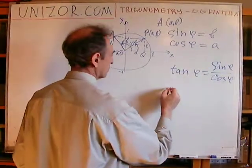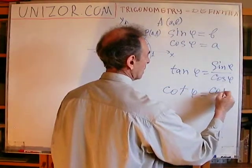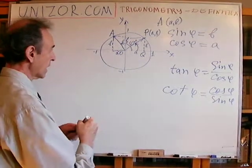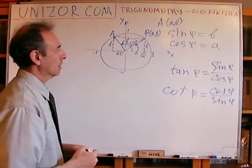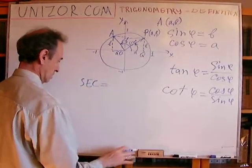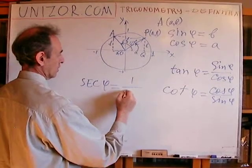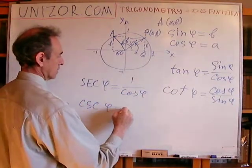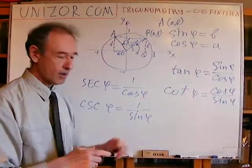Cotangent is, by definition, cosine over sine, which corresponds to the triangular definition of A over B. What else is left? Secant and cosecant. Secant phi, by definition, equals one over cosine phi, and cosecant phi equals one over sine phi. So these are all definitions.